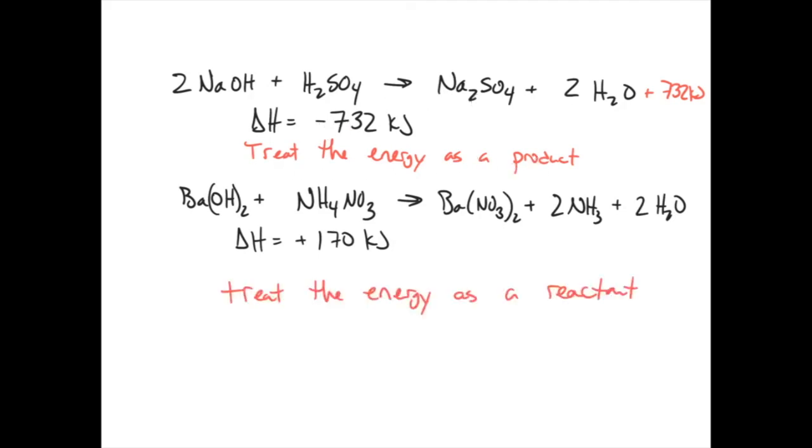And by contrast, if you've got a positive delta H, then you'll treat the energy as a reactant. And so I'll go in and add the energy as a reactant. It is 170 kilojoules of energy as one of the reactants. So again, in summary, if it's positive, you add it to the reactant side. If it's negative, you add it to the product side. But when it's listed in the chemical reaction, it's always a positive number. When it's listed separate as a delta H, the negative means that it's exothermic. The positive means that it's endothermic.